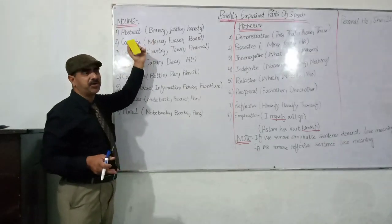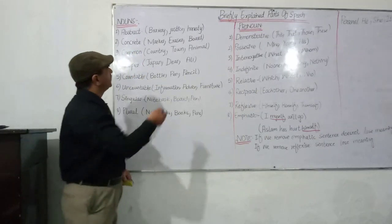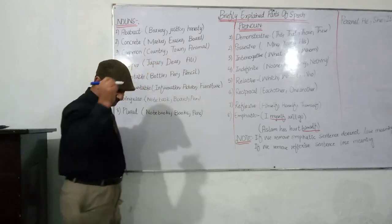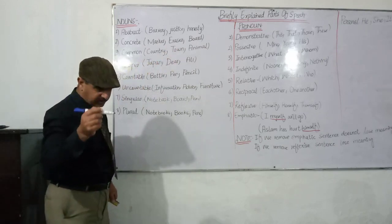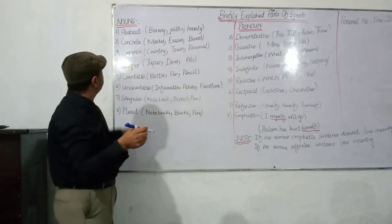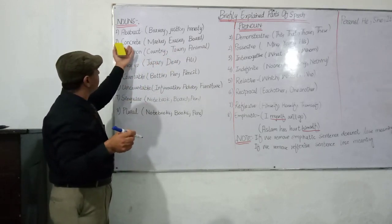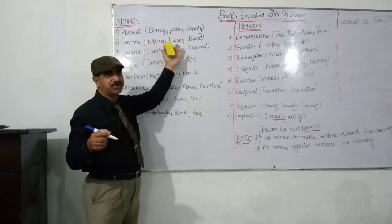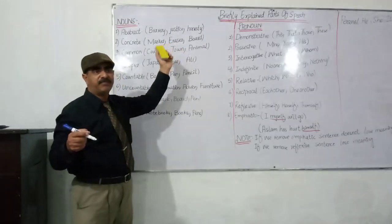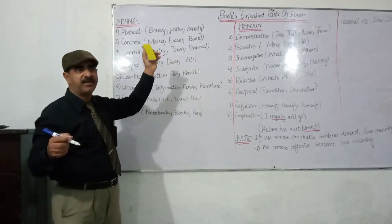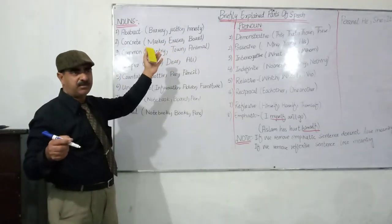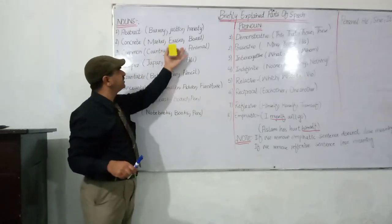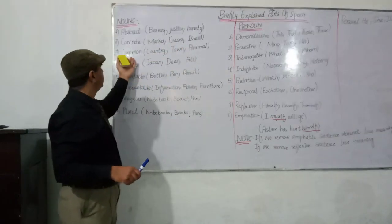Abstract nouns show an idea — bravery, justice, honesty. Next are concrete nouns, like marker, eraser, and board — these show something material, something materialistic.